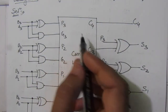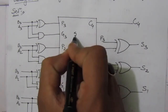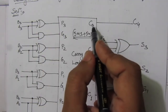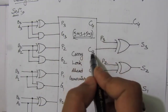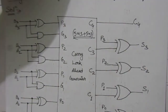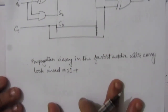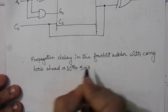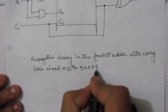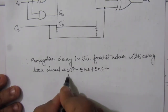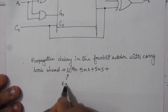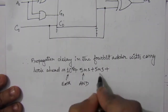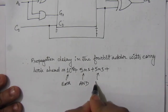We have to wait another 5 nanoseconds for the AND gate plus 5 nanoseconds for the OR gate to get C4, C3, C2, and C1. So the 10 nanoseconds accounts for the first XOR stage, then 5 nanoseconds for the AND gate and 5 nanoseconds for the OR gate inside the carry lookahead generator.